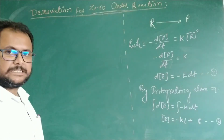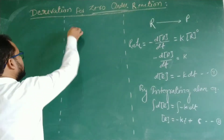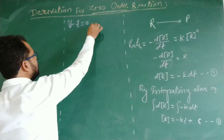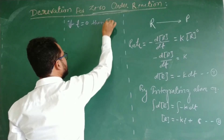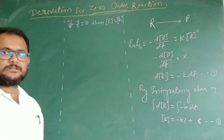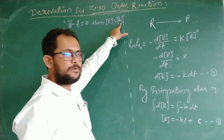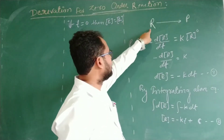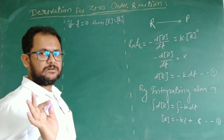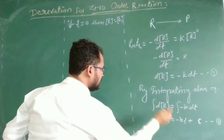Now, if we consider the initial condition where t equals 0, the initial time is zero. Then the reactant concentration will be at its pure initial value, represented as R-naught. When time is zero, the reactant concentration is R-naught, the initial concentration.